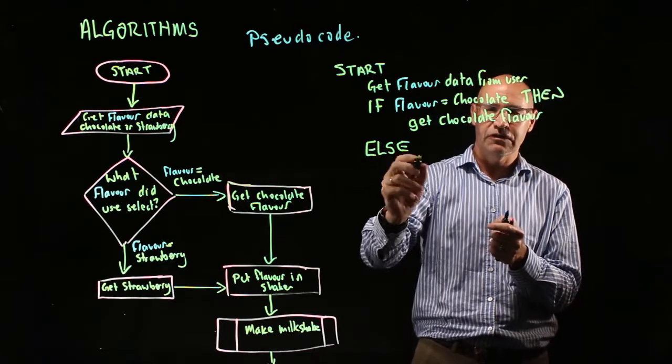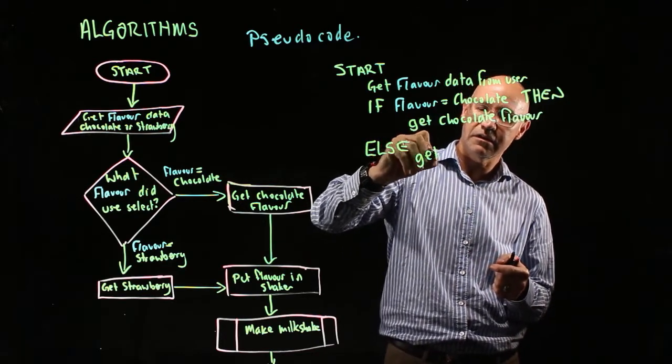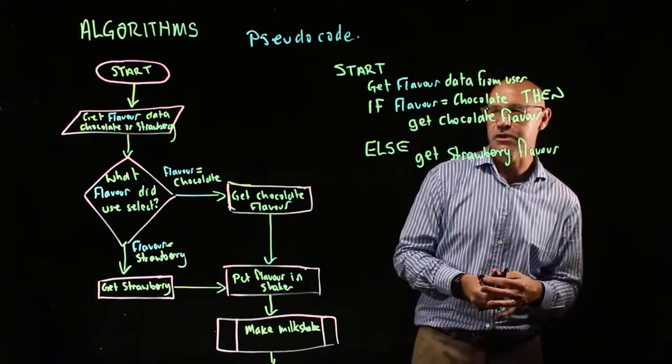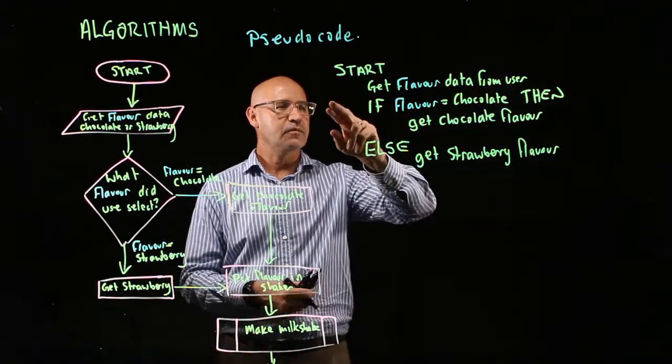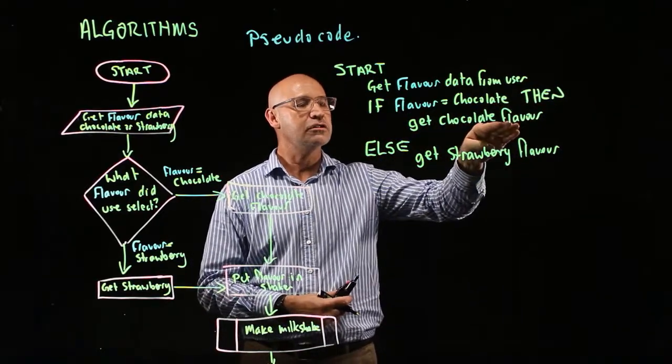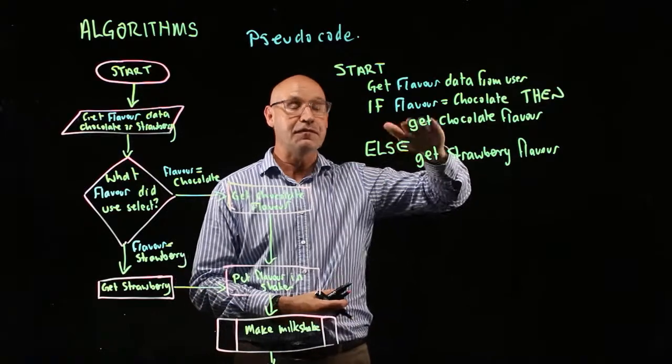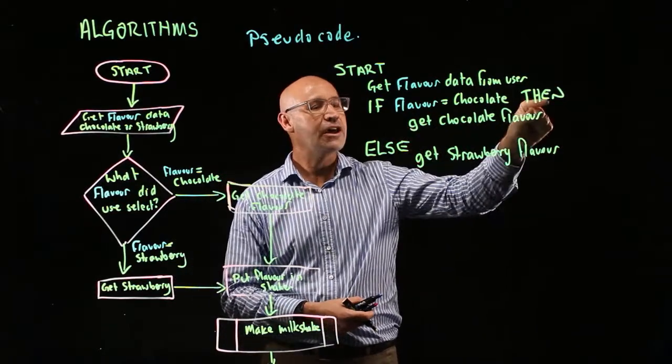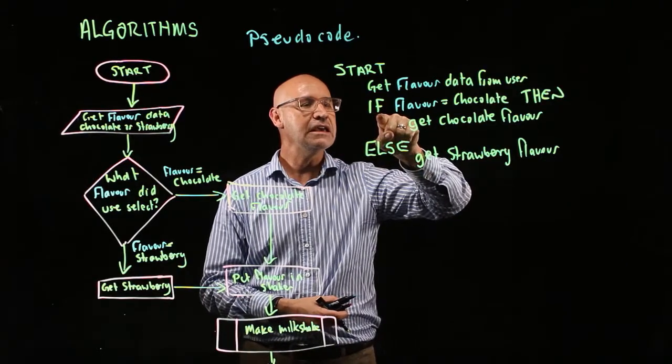Okay, so that's the language that we use here when we've got a choice. So if the flavor equals chocolate, then get chocolate. So we don't then say if the flavor equals strawberry, then get strawberry, because if it's not that, then you do this. So if-then, else do this.